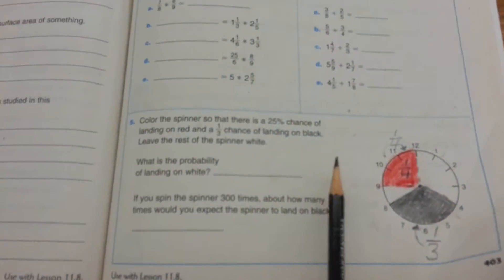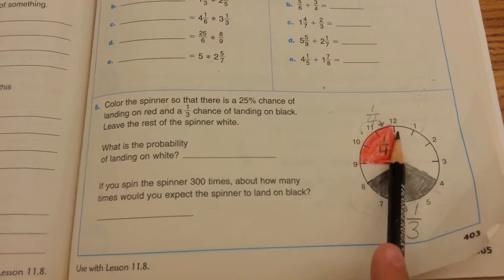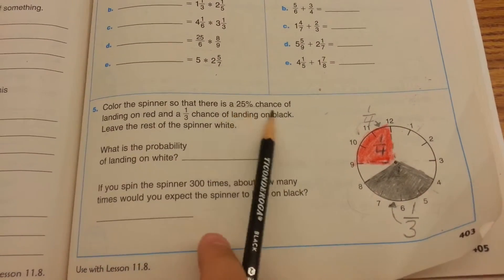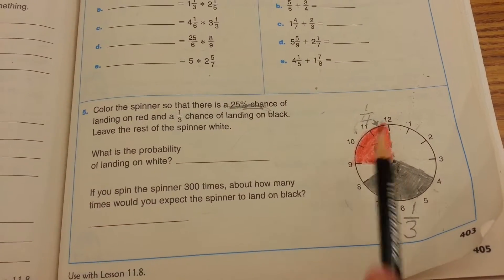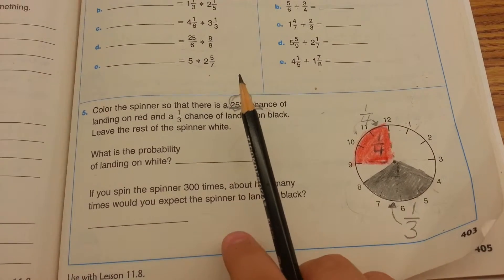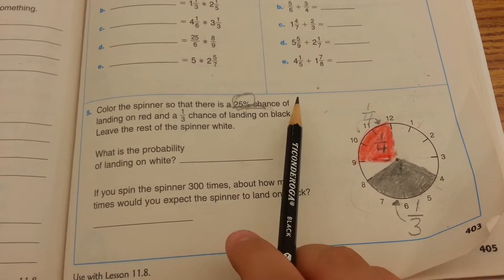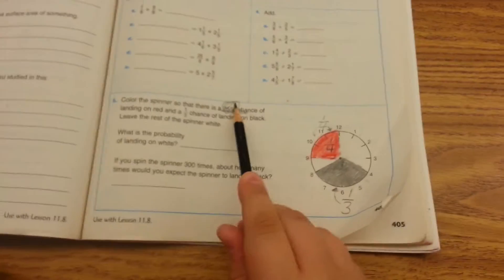You working on Daniel? This one. Okay, so what have you done so far, because it looks perfect. I colored it. It said 25% chance of the spinner landing on red, and I knew that 25 of 100 is one-fourth because a quarter is 25 cents of a dollar.